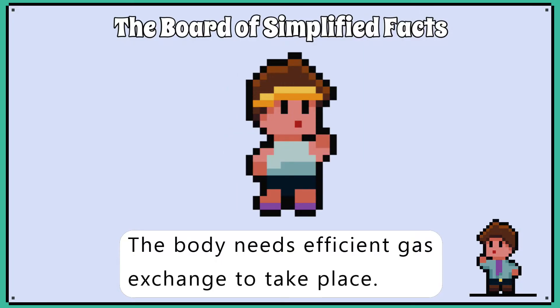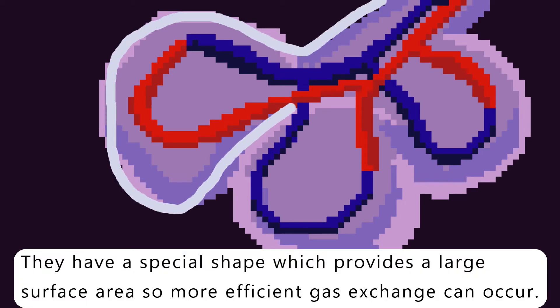The body needs efficient gas exchange to take place. The alveoli are adapted to facilitate this. They have a special shape which provides a large surface area so more efficient gas exchange can occur.